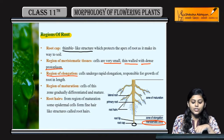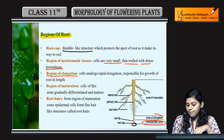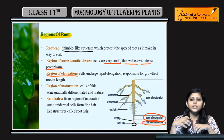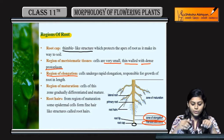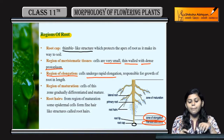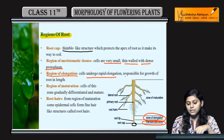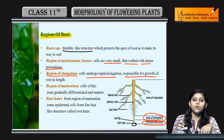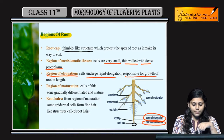Next is region of elongation. Meristematic zone se upar hootay hain — zone of elongation jahaan pe cells jo hootay hain, voh divide kerti hain aur elongate hootay hain. Cells undergo rapid elongation process in this region. Responsible hootay hain for the growth or length of root of the plant.